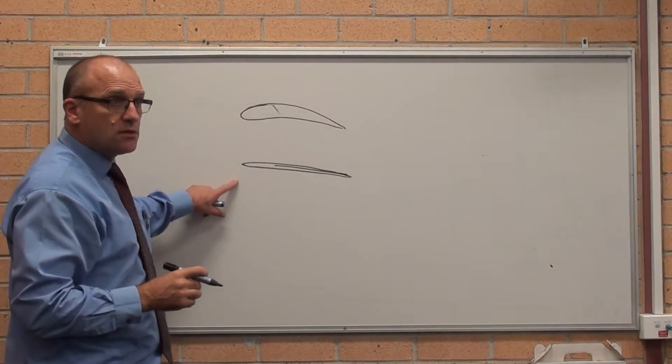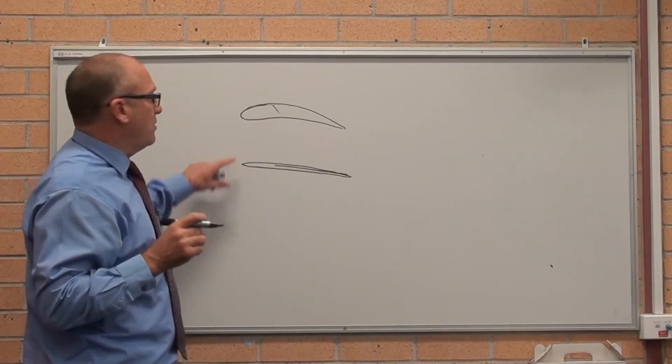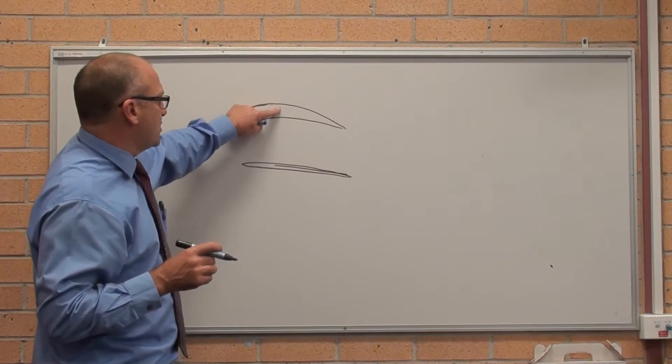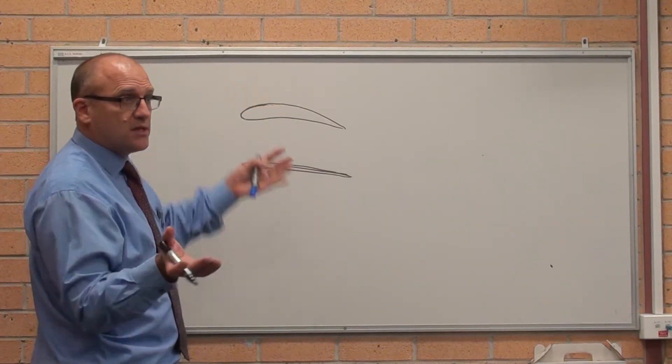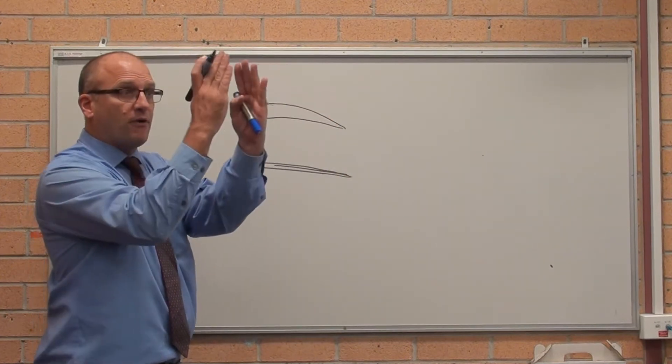Because the faster it goes, this thing would generate so much lift if it was travelling at supersonic speeds that the wings would actually lift themselves up and fold in half.